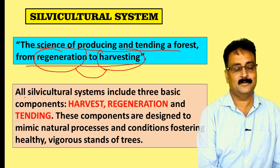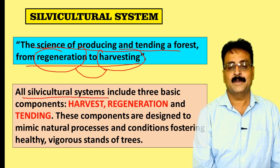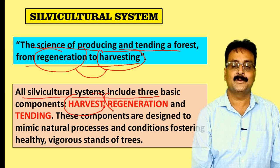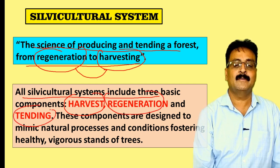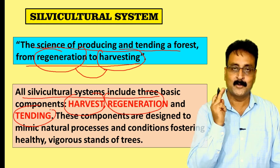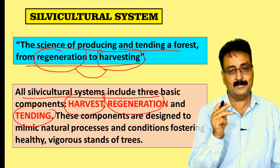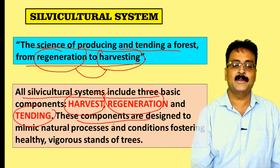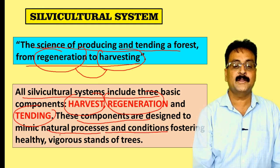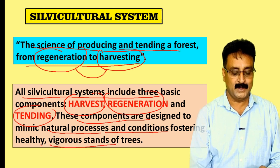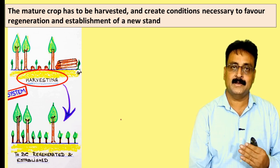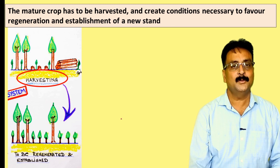All silviculture systems include three basic components: number one is harvest, number two is regeneration, and number three is tending. These three basic components are part of a silviculture system. These components are designed to mimic natural processes and conditions, fostering a healthy, vigorous stand of trees. The silviculture system helps us develop and renew a stand.